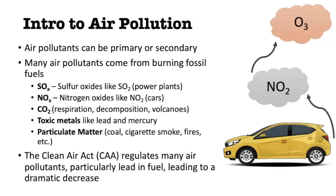Let's start off with what primary and secondary pollutants are. Take a look at the picture of the car on the right side of your screen. That car is directly emitting one pollutant — in this case NO2, or nitrogen dioxide. That makes it a primary pollutant because it is coming directly from a source. That NO2 can be converted into ozone (O3) later on through chemical reactions, and that O3 is a secondary pollutant because it is not coming directly from a source, but is actually being created in the atmosphere through chemical reactions.